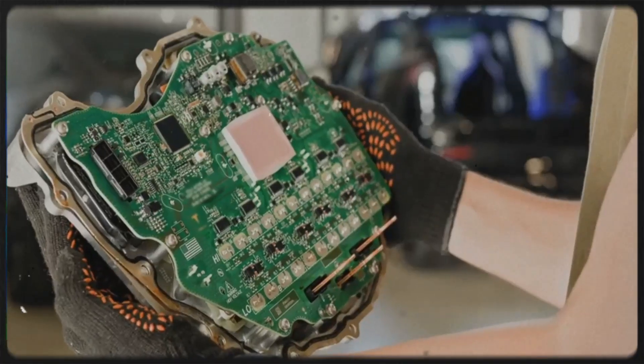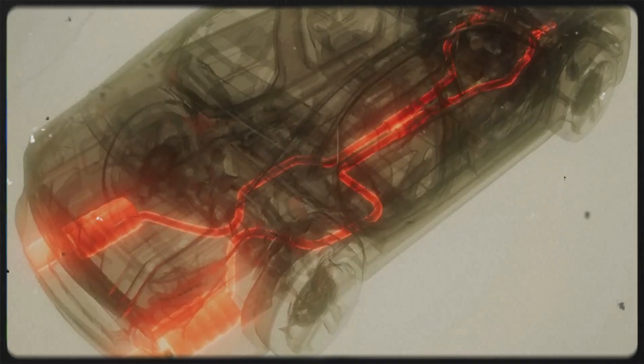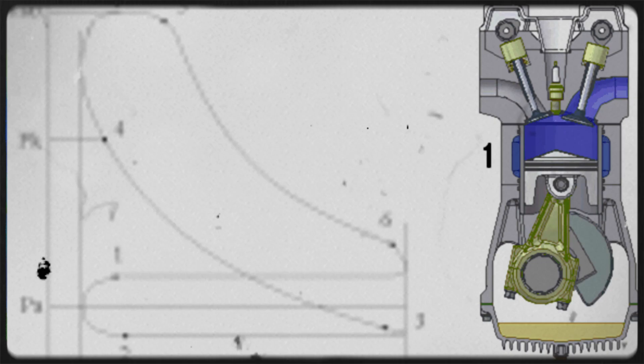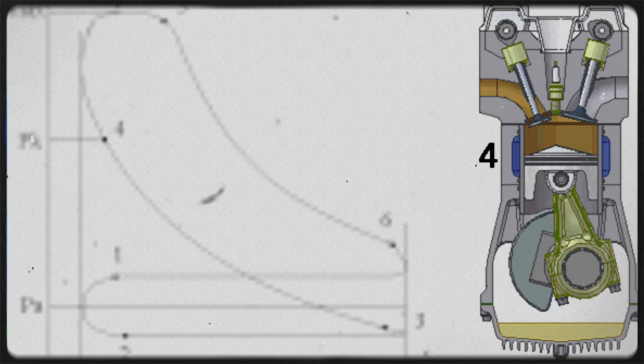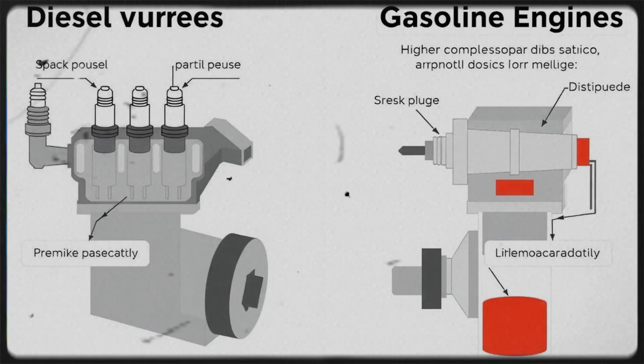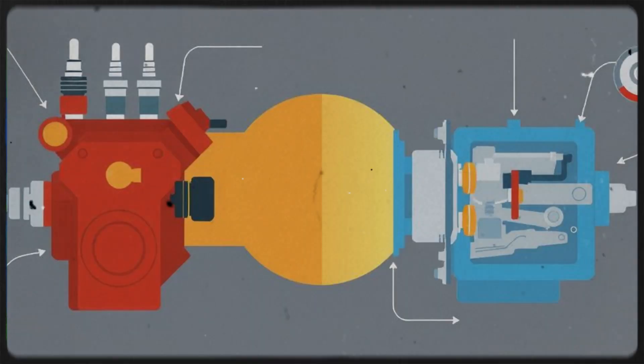First off, both diesel and gasoline engines work on what we call the four-stroke cycle. You know the classic intake, compression, power, and exhaust strokes that make an internal combustion engine run. So in that sense they're pretty similar. They both suck air in, compress it, burn fuel, and push the piston down to create power. But the way they actually ignite the fuel and manage the air-fuel mixture is quite different and this difference is at the heart of why diesel engines are generally more fuel efficient.